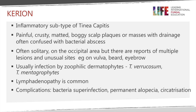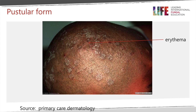Sometimes kerion results in permanent scarring alopecia, and it can also acquire bacterial superinfection. When you see a kerion, the first thing you think of is a scalp abscess, so you need to take a thorough history and examine the patient fully to distinguish between a kerion and a true abscess, because treatment is different for the two.